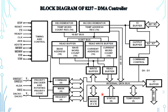The first register is the base address and base word count register, which is a 16-bit register. It is used to store the original starting address and original number of bytes to be transferred. During DMA operation, the content of the base address and base word count register is loaded into the current word register. This register cannot be read by the microprocessor.